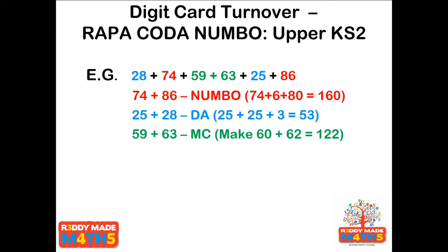I could have put the 74 with the 25 to give 99, which would have been quite nice, but I put the 74 with the 86 instead. I spotted a number bond straight away — put the 6 with the 74, that gave me double 80. That left 25 and 28, which is a lovely double and adjust, and 59 and 63 — I just passed one over to make it 60 and 62. There are many other ways we could have done it, but that one seemed to work particularly well.